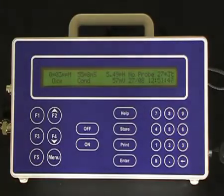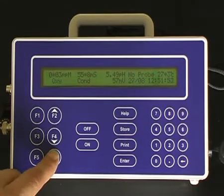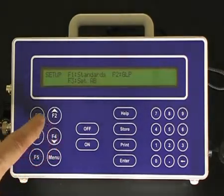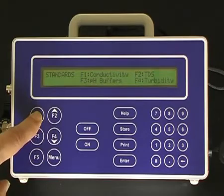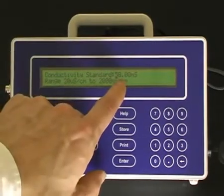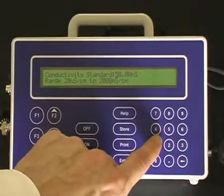Before calibrating conductivity sensors, you must first designate the concentration of the conductivity standard. Press Menu, press F4 for setup, press F1 for standards, press F1 for conductivity, and enter in the conductivity value through the keypad.